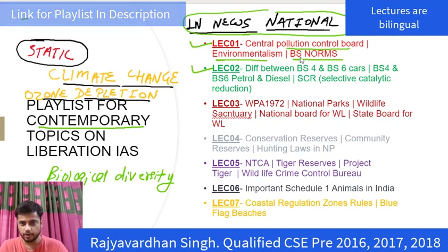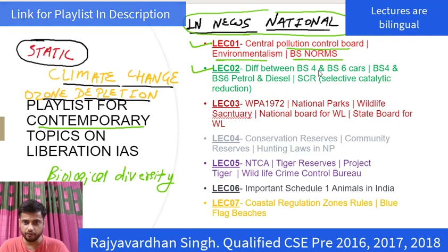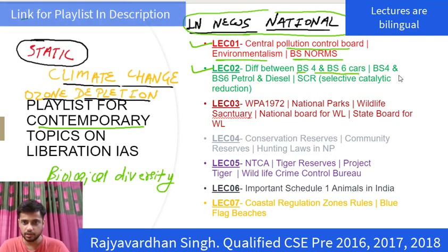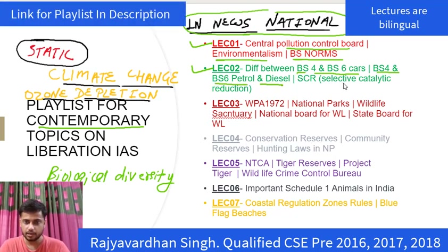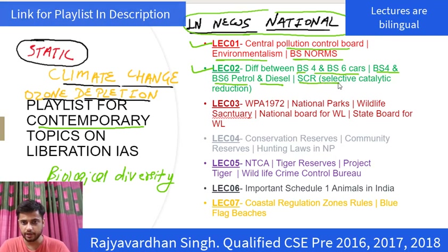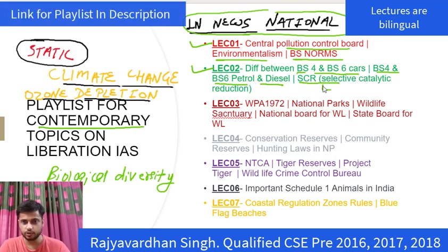In lecture 2, we continued with BS norms and discussed the difference between BS4 and BS6 cars, the difference between BS4 and BS6 petrol and diesel, and we also discussed selective catalytic reduction — a technique used in diesel engines.